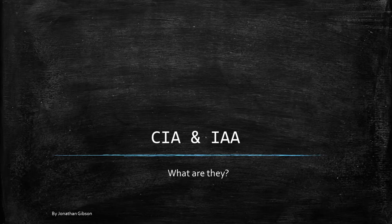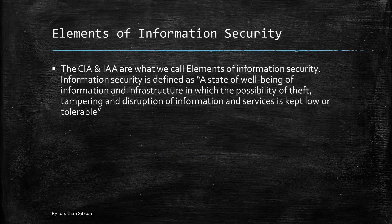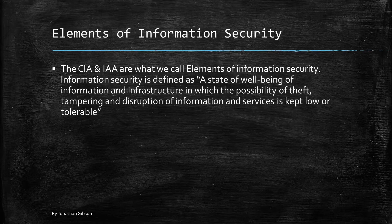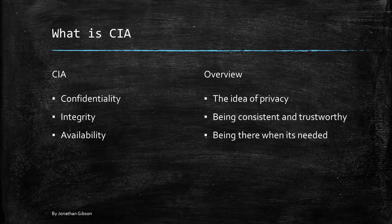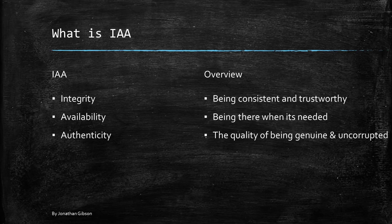There are two triple-letter acronyms you need to know for the CEH — CIA and IAA — which basically stand for the same thing. They are elements of information security, defined as a state of well-being of information and infrastructure in which the possibility of theft, tampering, and disruption of information and services is kept low or tolerable. CIA stands for confidentiality (the idea of privacy), integrity (being consistent and trustworthy), and availability (being there when it's needed). The only difference between CIA and IAA is authenticity, which is the quality of being genuine and uncorrupted.